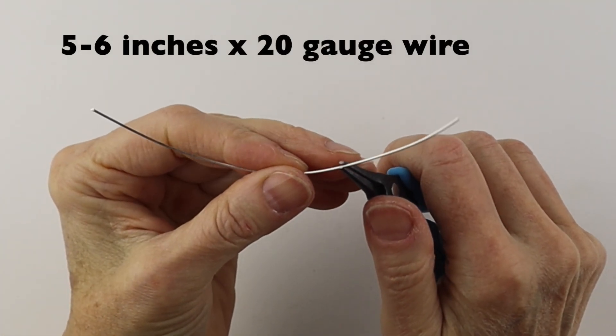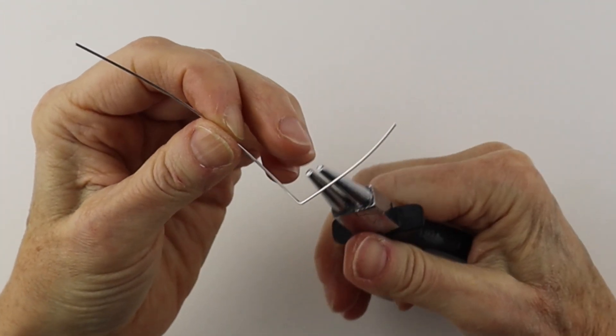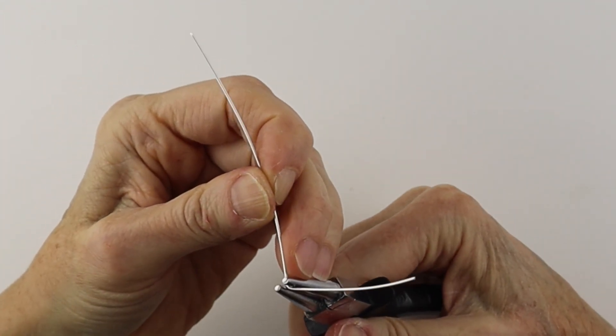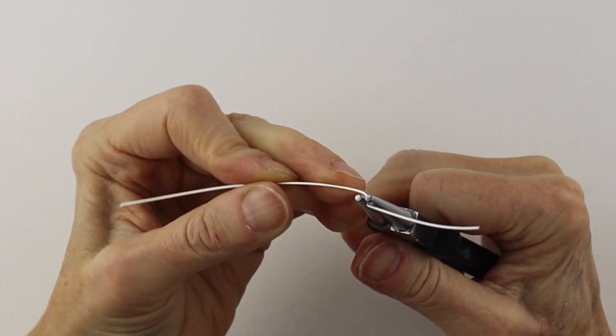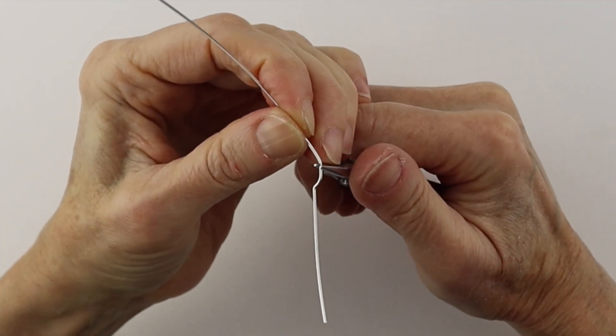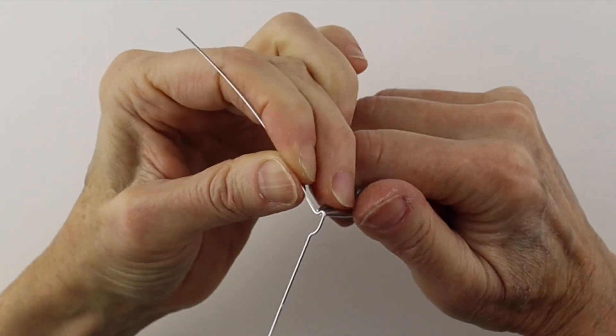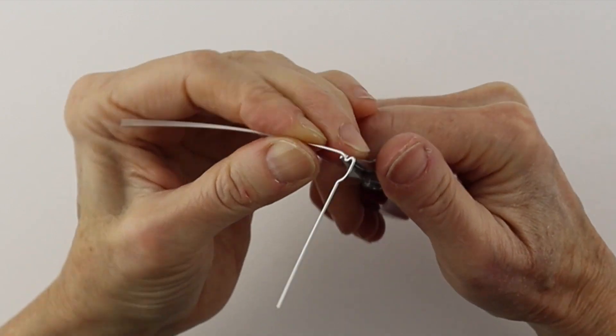So for the ghost you can get some 20 gauge wire and just freeform it. Just take the pliers, bend it on an angle and then just bring this one down. You can do a very plain shape if you want for the ghost. We could just do sort of a little loopy thing at the bottom.